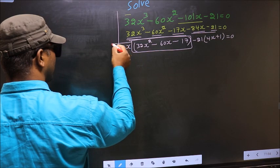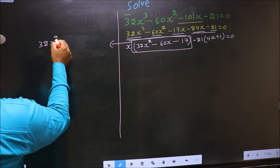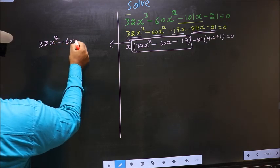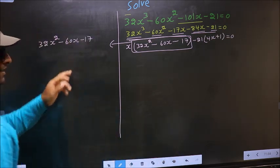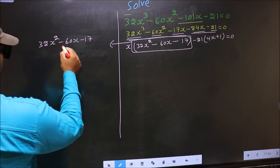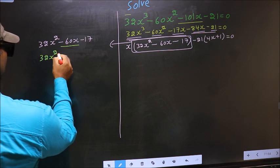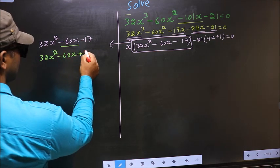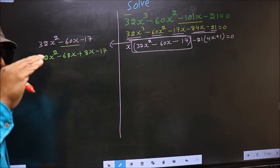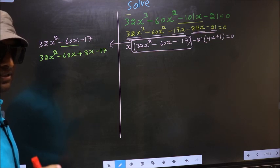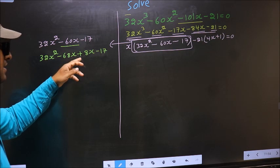Now we have come across a quadratic: 32x² minus 60x minus 17. To factorize this we should split the middle term, minus 60x. So in place of minus 60x I write minus 68x plus 8x. Directly I have split minus 60x into minus 68x plus 8x.